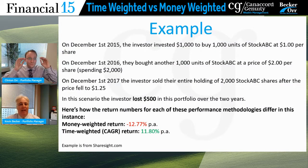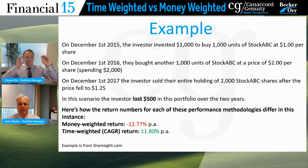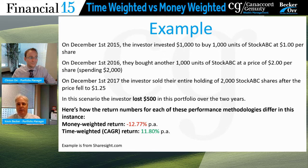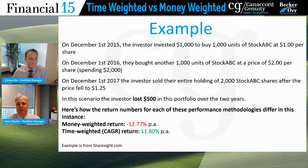If we look at this example: on December 1st, 2015, we invested $1,000 and bought 1,000 units of stock ABC at $1. A year later we do the exact same thing — 1,000 units, but now we're buying at $2. Then in 2017 we sell those 2,000 shares at $1.25. In this scenario we paid more money and we've actually lost $500 over the two years. But on a time weighted basis, we're looking at a return of 11.88%. Our money weighted return with the money in and out is now down 12.77%.